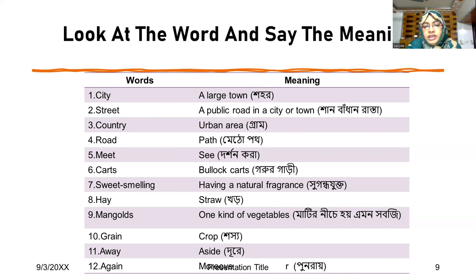Sweet-smelling — having a natural fragrance. Hay — straw. Mangels — one kind of vegetable.